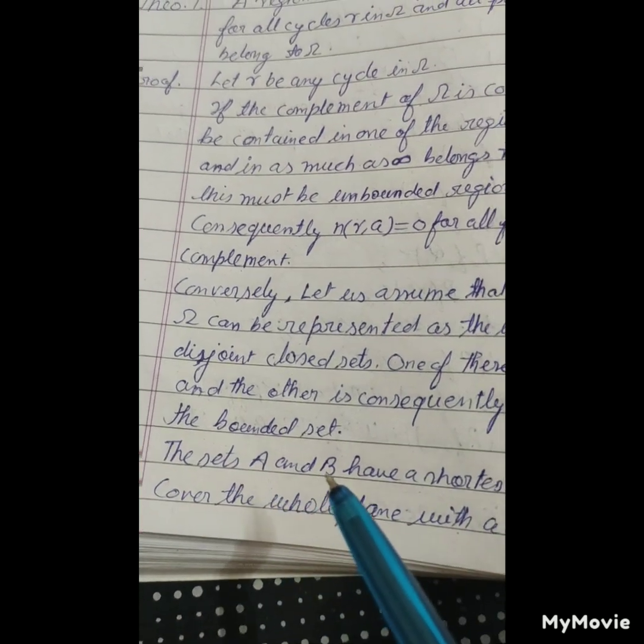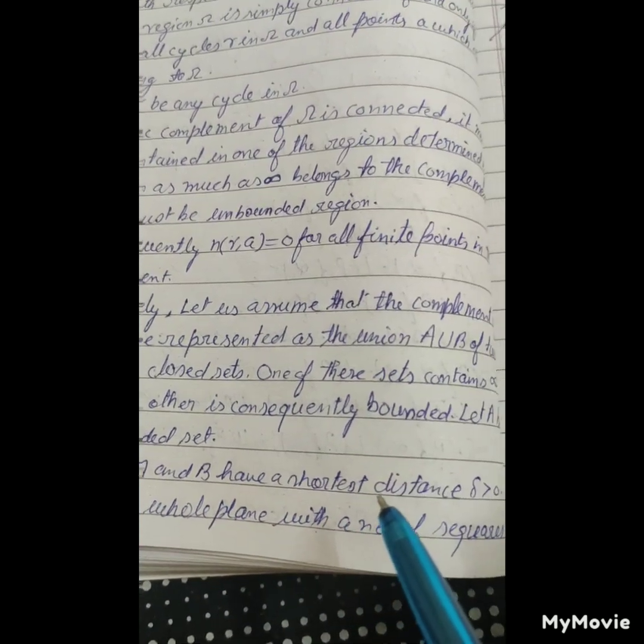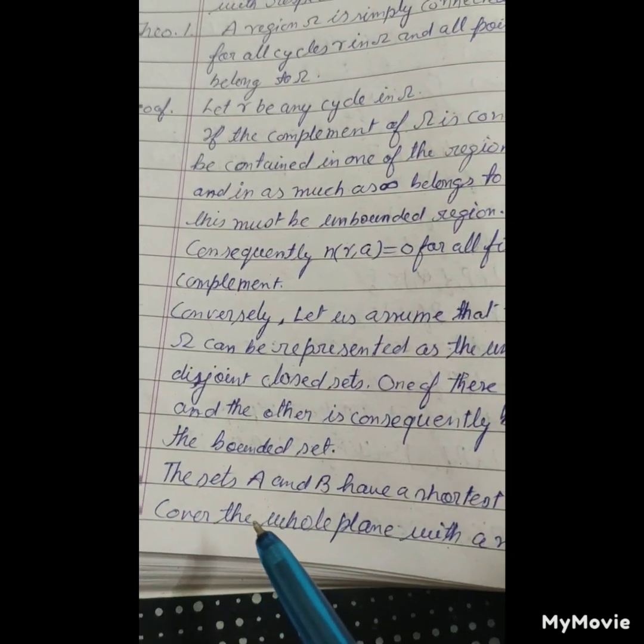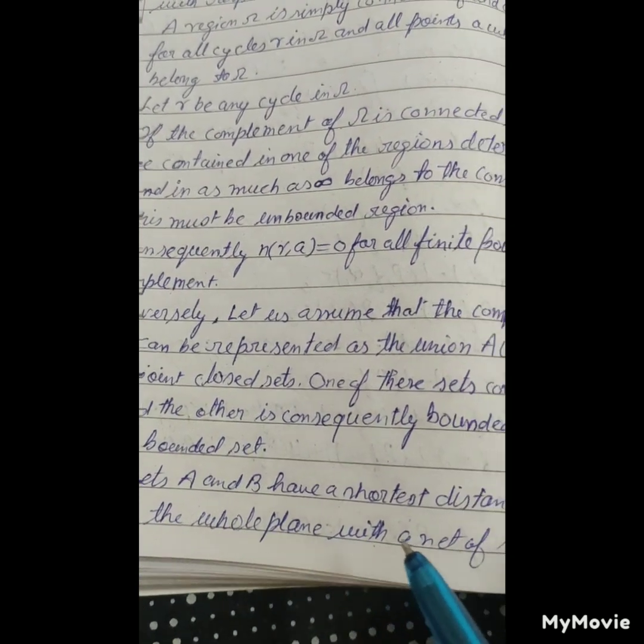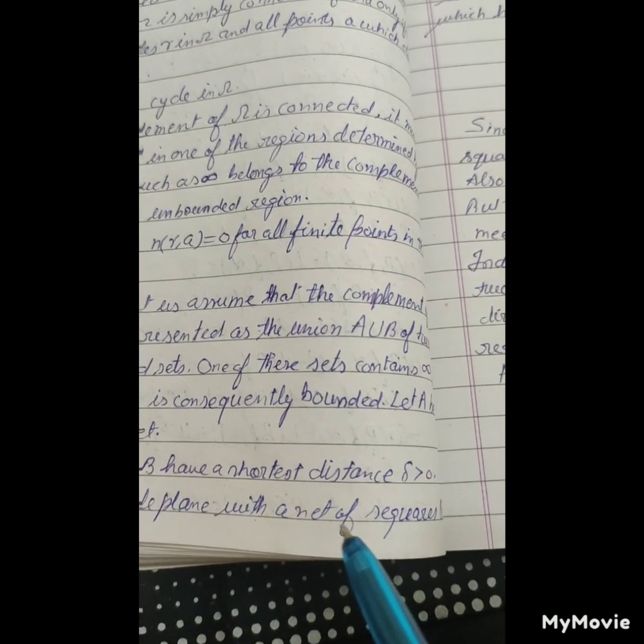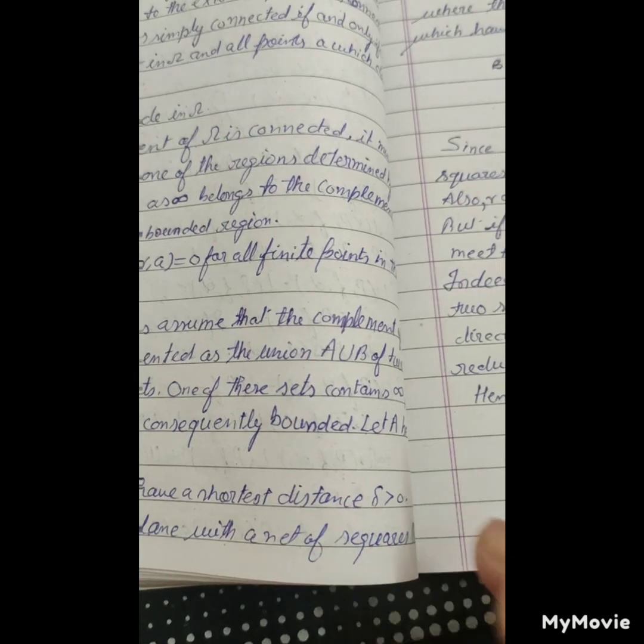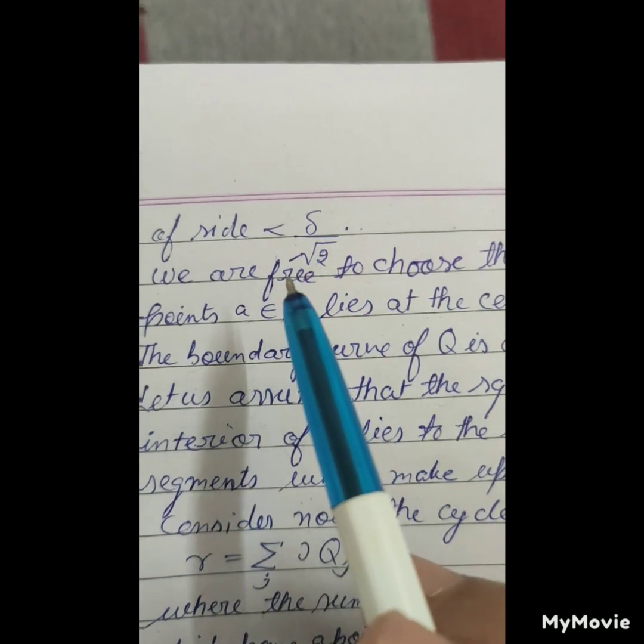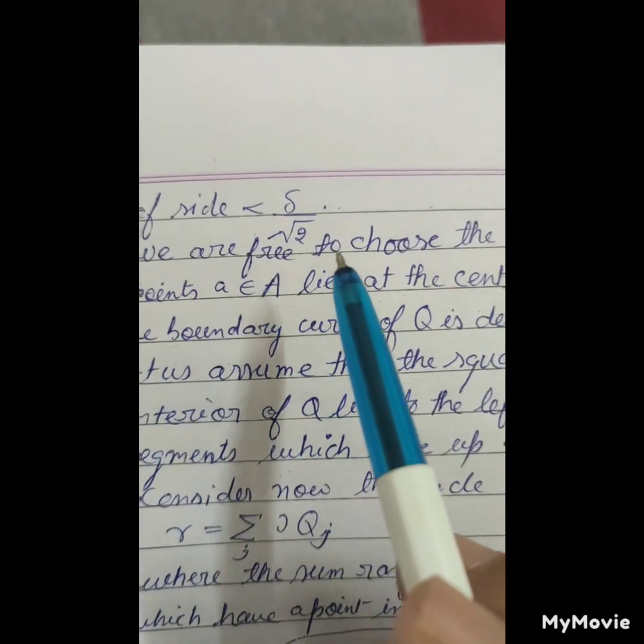The sets A and B have a shortest distance delta which is greater than zero. Cover the whole plane with a net of squares Q of side delta upon square root 2. We are free to choose the net.